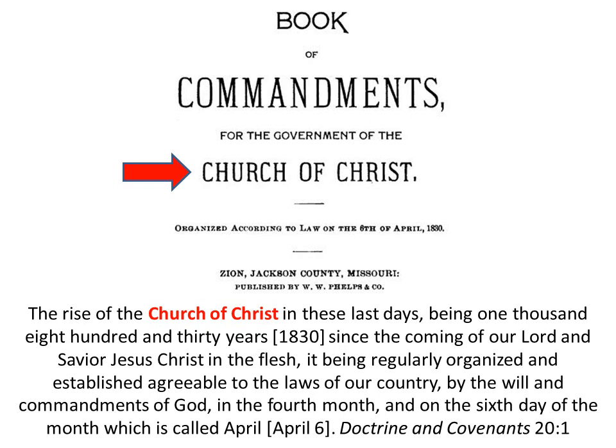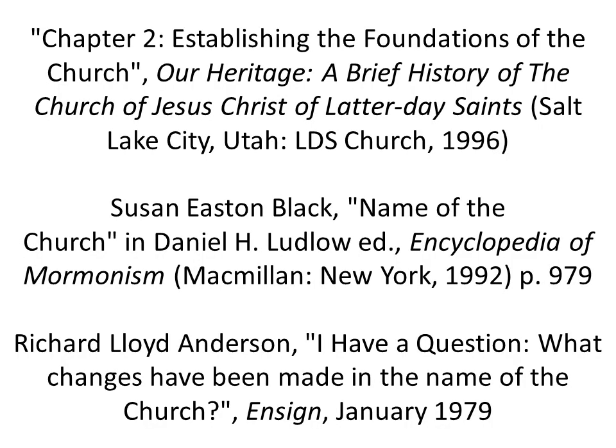The picture above shows the title page for the Book of Commandments, the predecessor to the Doctrine and Covenants. The Book of Commandments was published in 1833, during the time frame when they were using the name Church of Christ. On the title page it says 'Book of Commandments for the government of the Church of Christ, organized according to law on the 6th of April, 1830.' The first edition of the Doctrine and Covenants didn't happen until 1835, one year approximately after they were using the name Church of Christ.